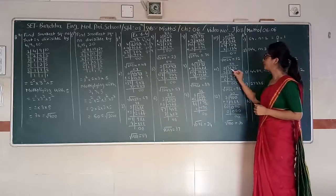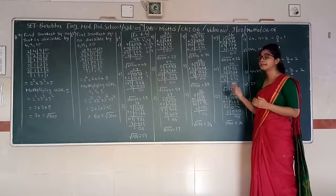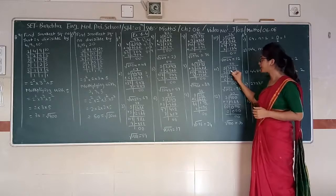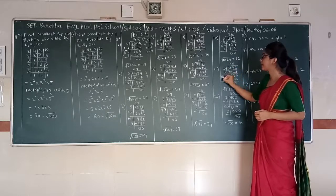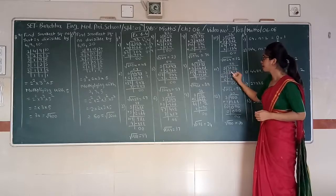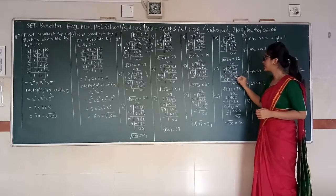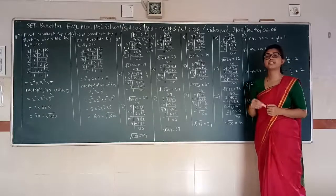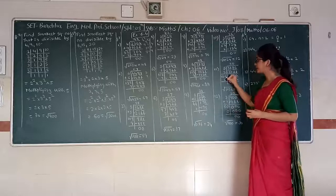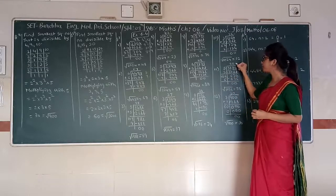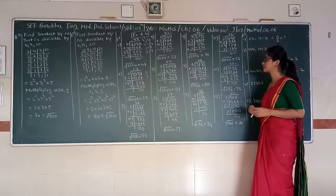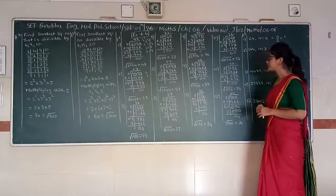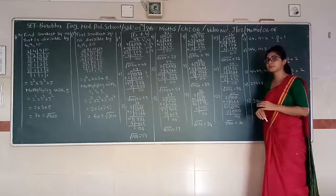Next: 3136. Two pairs are 31 and 36. Nearest perfect square to 31 is 25. 5 times 5 is 25. 5 plus 5 gives 10. 31 minus 25 gives 6. Taking 36 downward, we have 636. Unit digit is 6; 6 sixes are 36. We write 6 here. 106 times 6 gives 636. Answer is 0. Hence, square root of 3136 is 56.